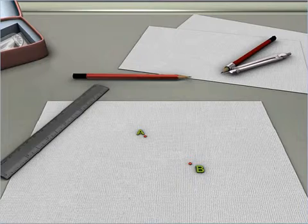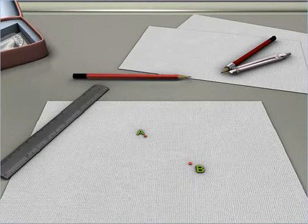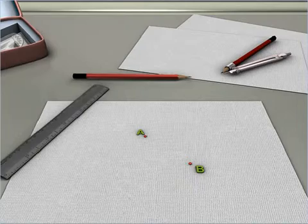Now consider points A and B. How many circles can be drawn through points A and B?